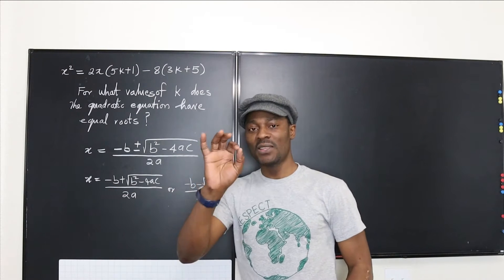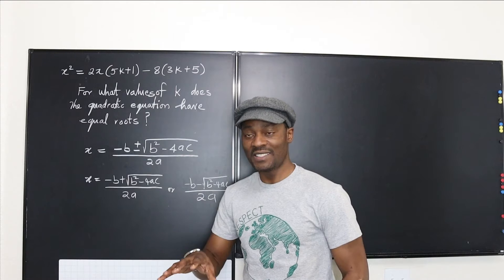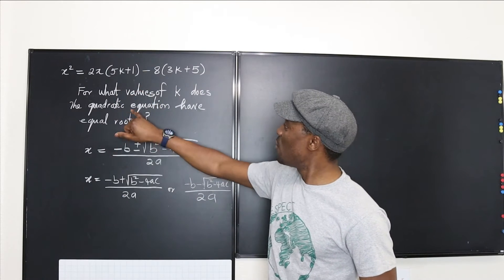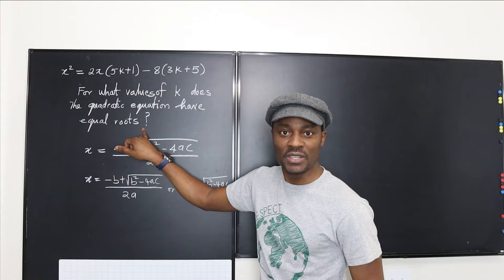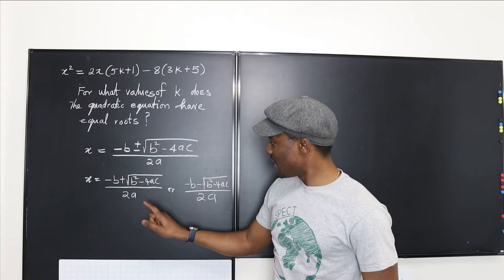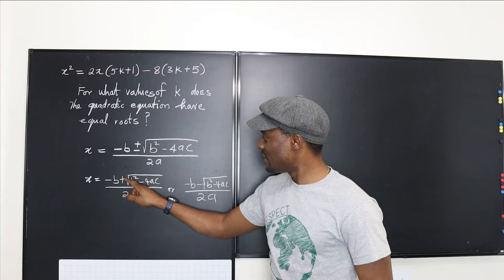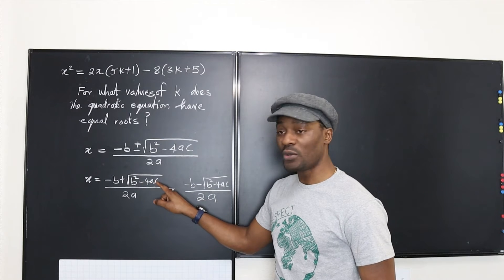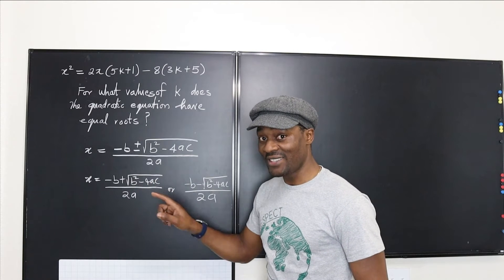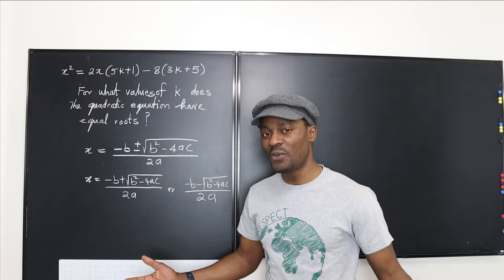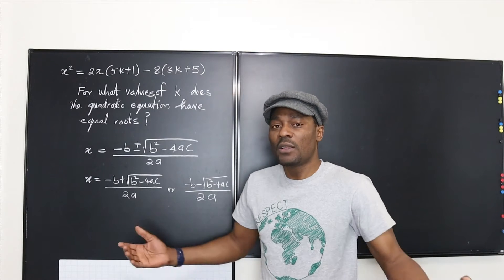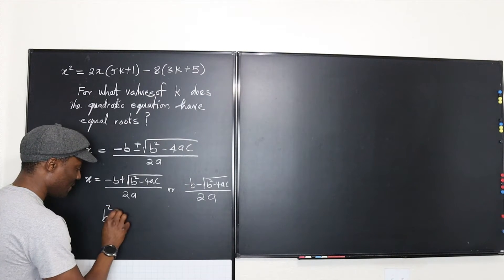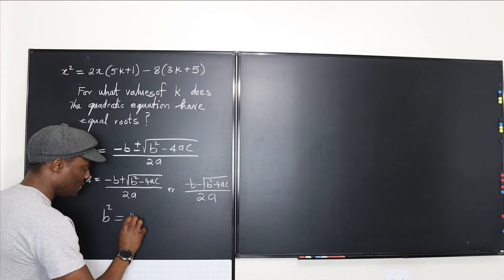The long and short of this is that the only time you're going to have equal roots for any quadratic equation is when you get zero inside the square root. And when you get zero there, it means b squared is exactly equal to 4ac. So what are we looking for in this question? We're looking for the values of k that will make b squared equal to 4ac.